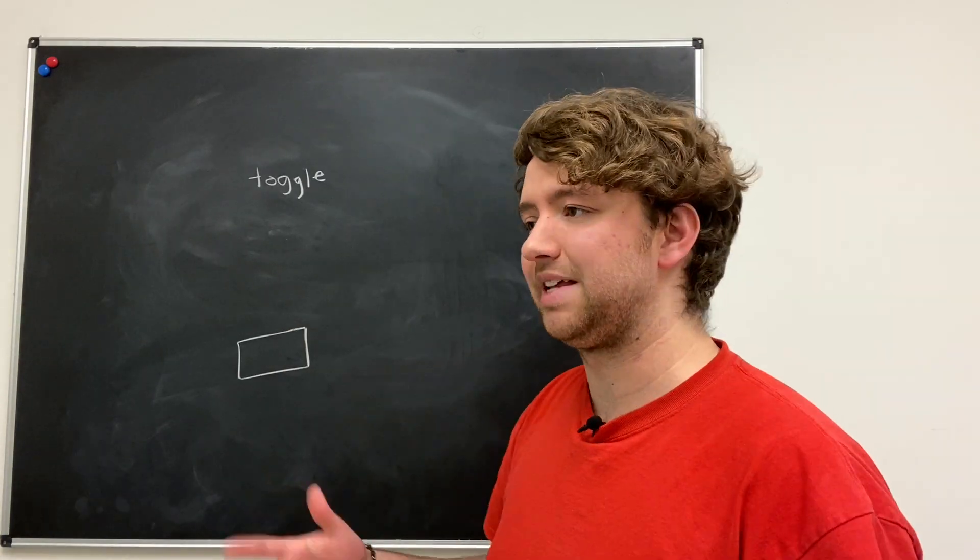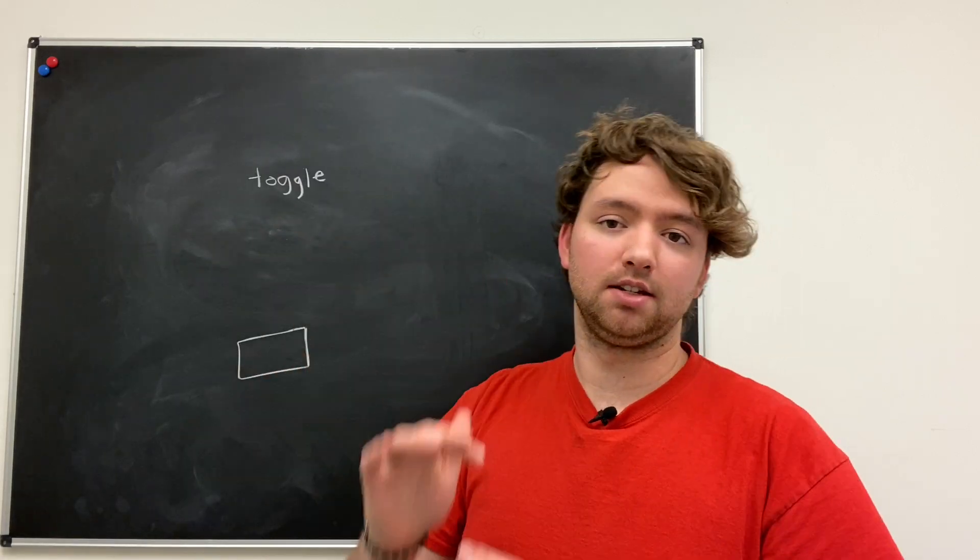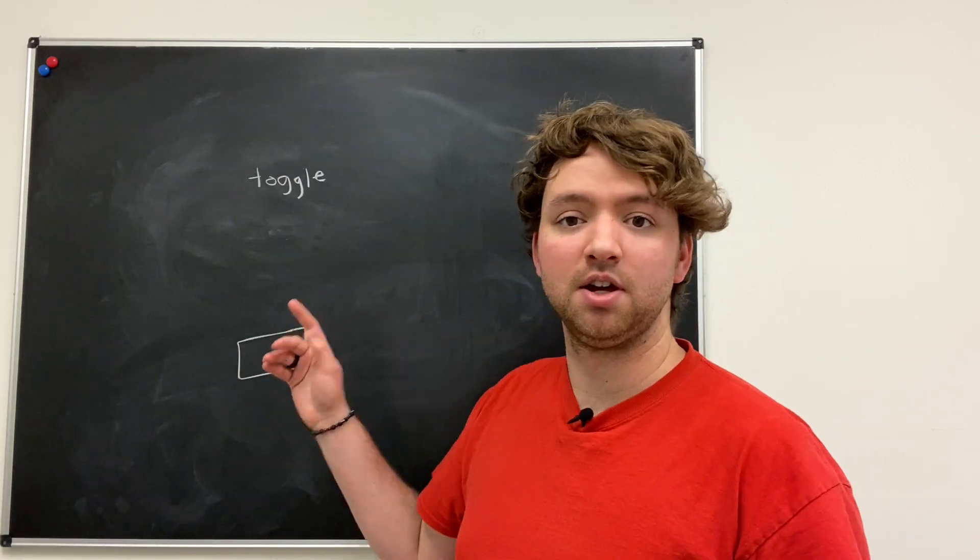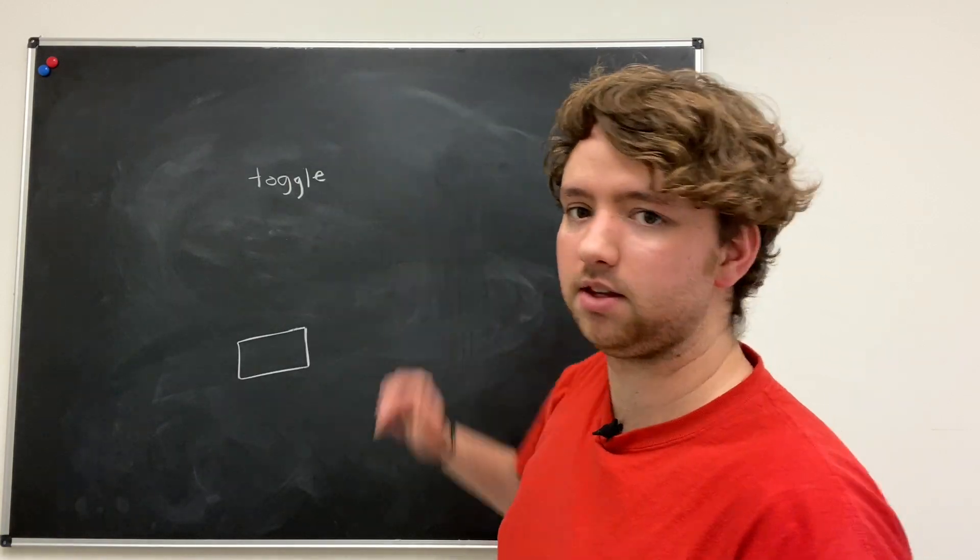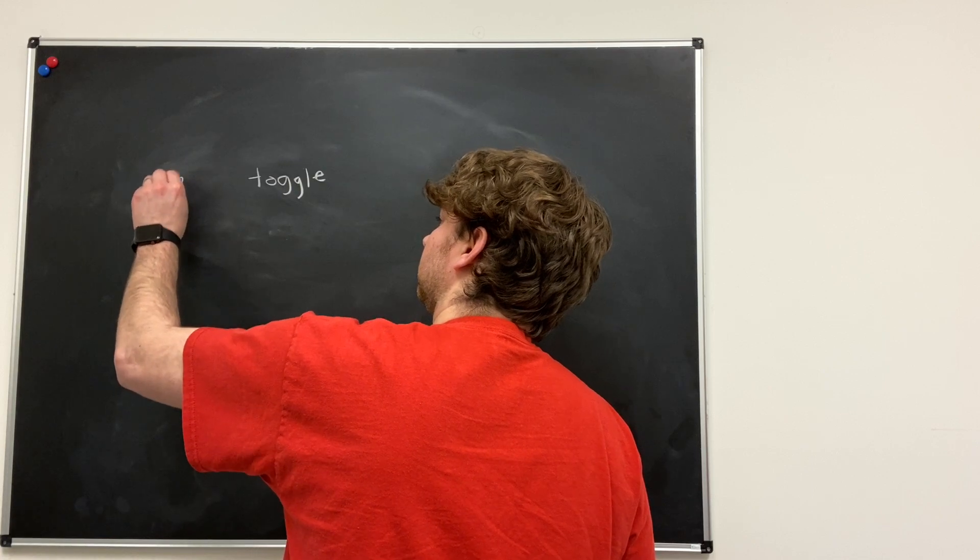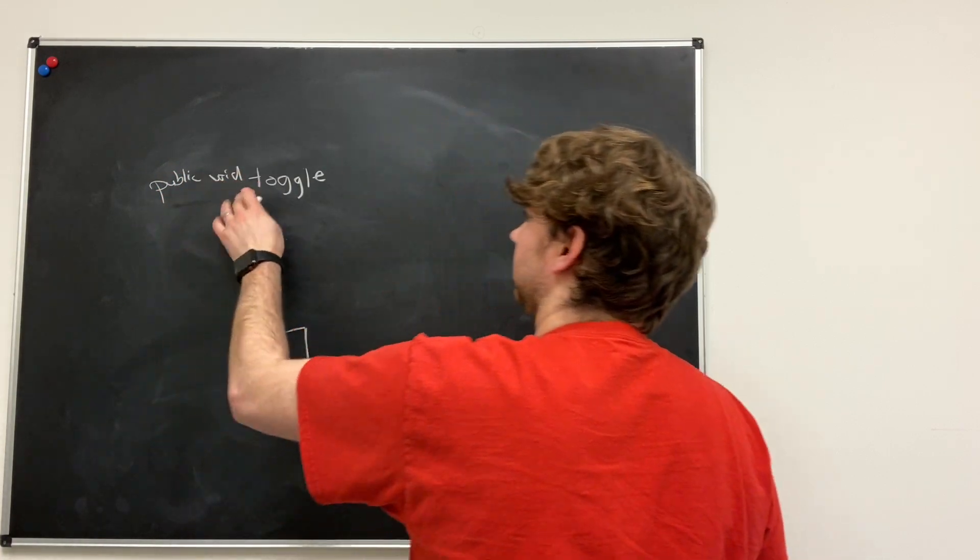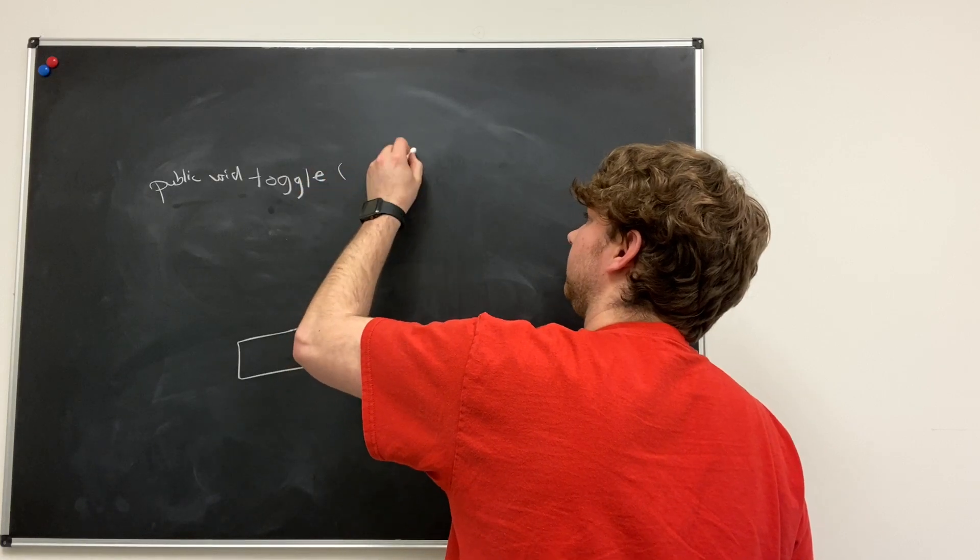It makes our life easier rather than copying and pasting that code every time something happens. All we have to do is execute this toggle method. When you make a method, it's going to look something like this: public void, the name of it, some parentheses, and then some curly braces - this is where the code goes.